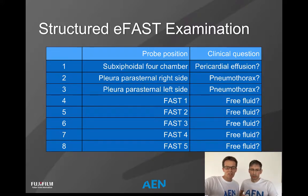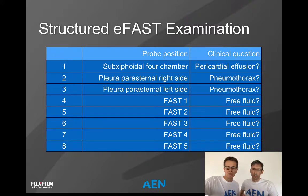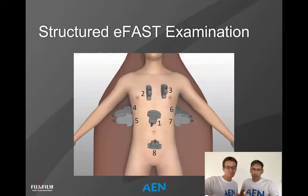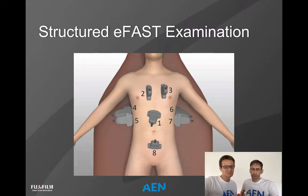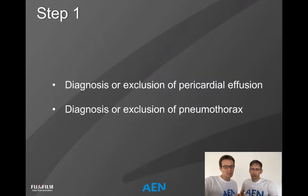This comes from the older FAST examination course where we only had five positions. Now, as the extended FAST examination, we have eight total, and the five FAST positions look for free fluid in the chest and in the abdomen. It might be confusing to see all these propositions in the overview, but we developed some steps to make clear how to find the positions and the right scanning window.